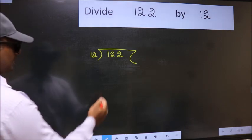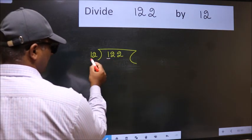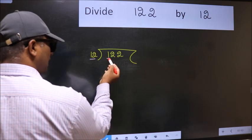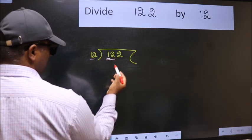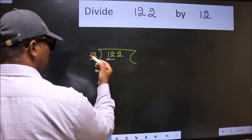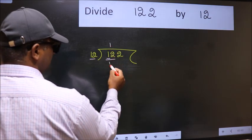Next, here we have 1 and here 12. 1 is smaller than 12. So, take two numbers, 12. When do we get 12 in the 12 table? 12 once, 12.